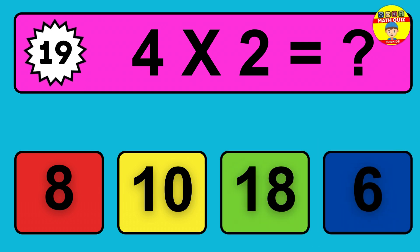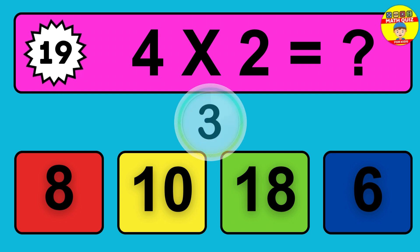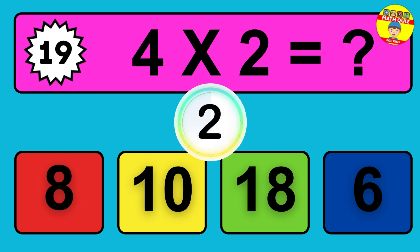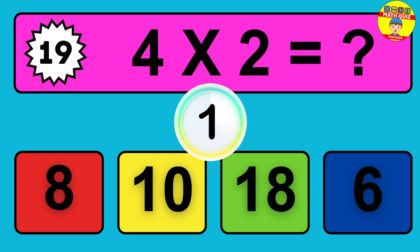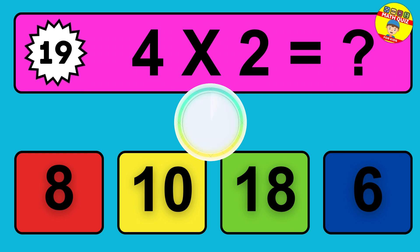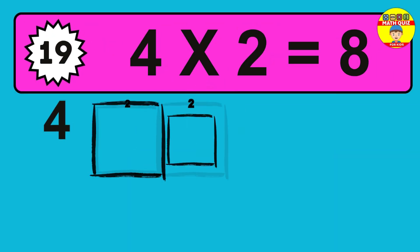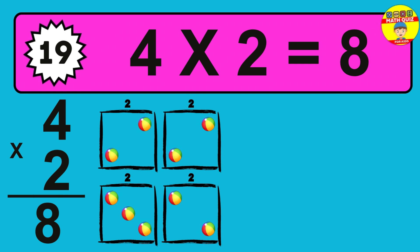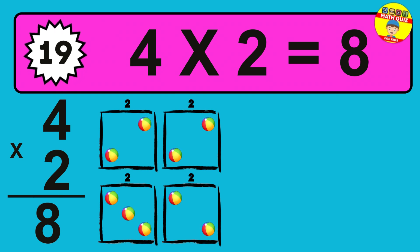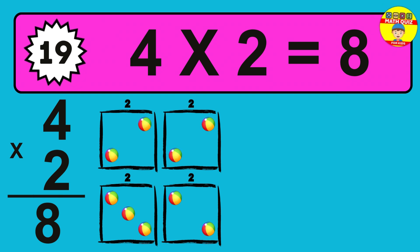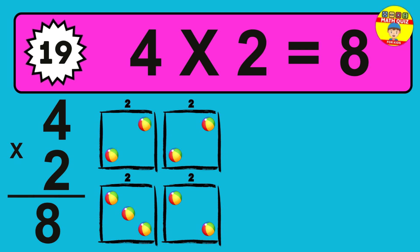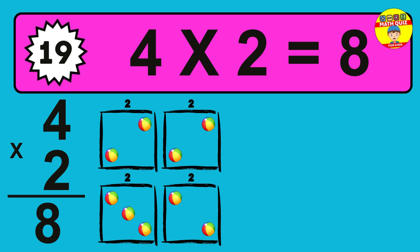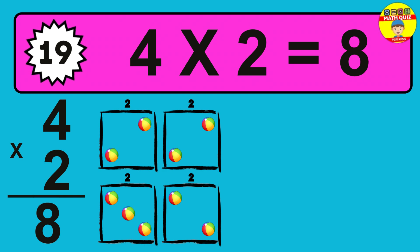Question 19. Four times two equals what? So the answer is four times two is eight. To calculate, we have four groups with two balls each one. So how many balls do we have? Eight balls.